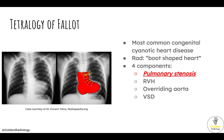Tetralogy of Fallot is the most common congenital cyanotic heart disease. Classically, they'll show you this picture and the buzzword is a boot-shaped heart. What is responsible for this shape is the right ventricular hypertrophy, which pushes the apex of the heart up. There are four components to Tetralogy of Fallot: pulmonary stenosis, right ventricular hypertrophy, an overriding aorta, and a ventricular septal defect. Pulmonary stenosis is emphasized because the degree of pulmonary stenosis determines how severe the Tetralogy of Fallot is.